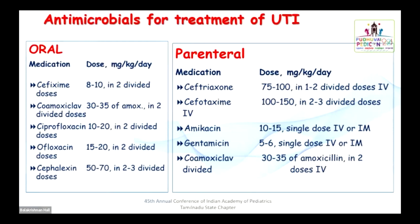Coming to treatment: Children more than 3 months of age who are tolerating orally and have adequate hydration need not be hospitalized — go for oral antibiotics. Commonly used antibiotics include cefixime, co-amoxiclav, ciprofloxacin, ofloxacin, or cefalexin. When hospitalization is preferred, parenteral antibiotics such as ceftriaxone, cefotaxime, amikacin, gentamicin, or co-amoxiclav can be given. Ensure renal function is normal before giving aminoglycosides, and serial monitoring of renal function should be done when aminoglycosides are started.